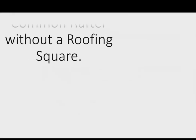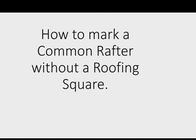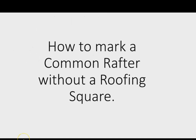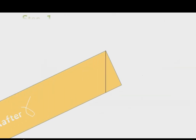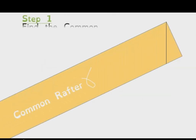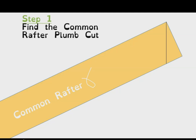We're going to go through the steps for marking out a common rafter using basically just a scientific calculator. Here you can see illustrated a common rafter, and I've already marked what we're after, which is the plumb cut at the top of the common rafter — that's in line with the center of the ridge board at the top of the roof. This animation will continue on to show the steps taken and the formula we can use.